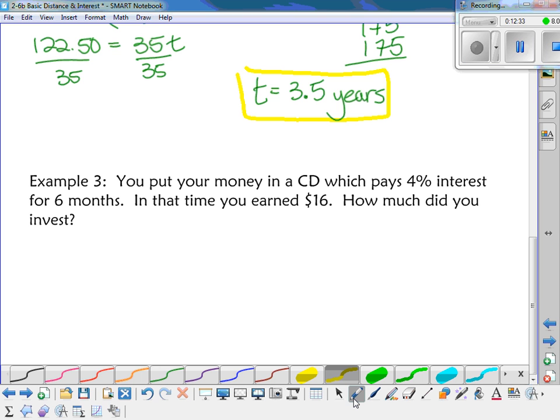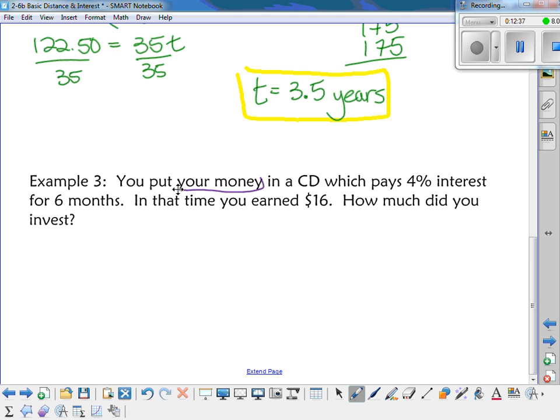So you need to be looking at, you put your money. Do I know how much money I put in? No. What do we call the money that we put in the bank? What's it called? The money that we invested? Is it I, P, R, or T? It's P. It's the principal. What you put in the bank is the principal. It's paying 4% interest. What's that? That's your rate. Remember the percent is always going to be your rate. And so we're going to make it a decimal, 0.04. For six months, what's that one? The time. Now, how much of a year is six months? Half. So you could either use the fraction one half or you can use 0.5. And in that time you earned $16. What is that $16? What does the bank pay you on your savings? Interest.